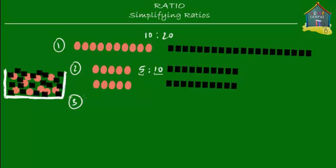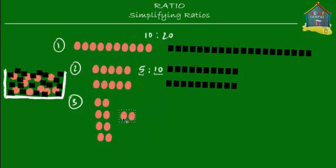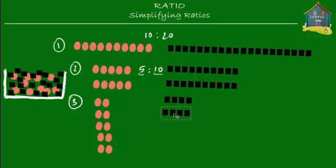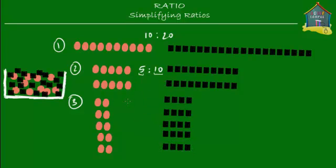Then she said, how about arranging them in five rows instead? So she made five rows each containing two red stickers. To put 20 black stickers in five rows, she needed four stickers per row. She observed that in each row there were two red stickers and four black stickers, giving her a new ratio of 2 to 4.